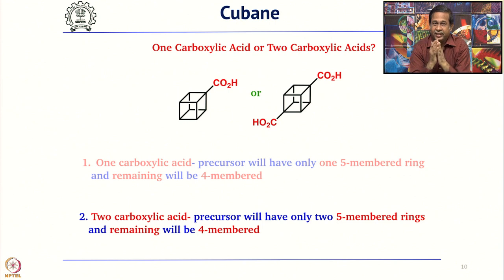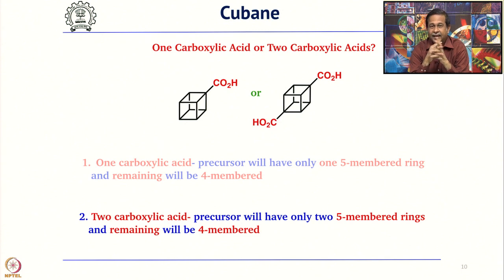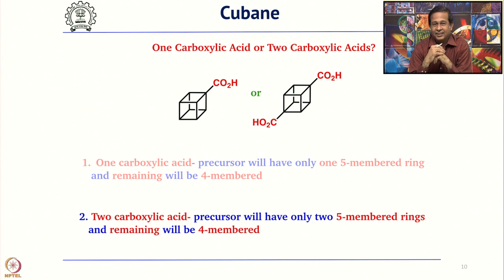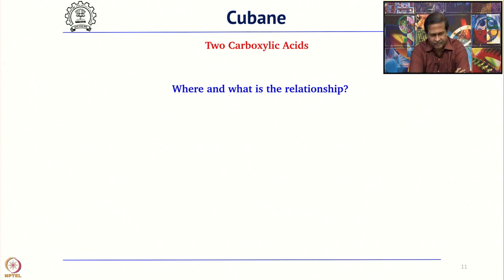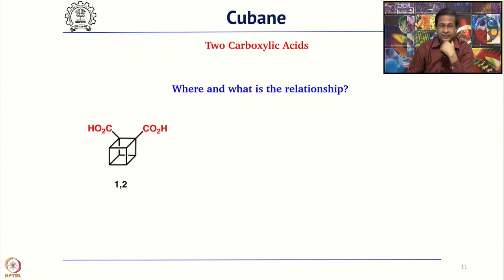Between these two choices, one should prefer to have two carboxylic acids — in other words, introduce two carboxylic acids to Cubane, then start the retrosynthesis. When you want to introduce two carboxylic acids, where will you introduce them? Like an aromatic system, you can have 1,2-position, 1,3-position, and 1,4-position. So you have 1,2-dicarboxylic acid, 1,3-dicarboxylic acid, and 1,4-dicarboxylic acid.